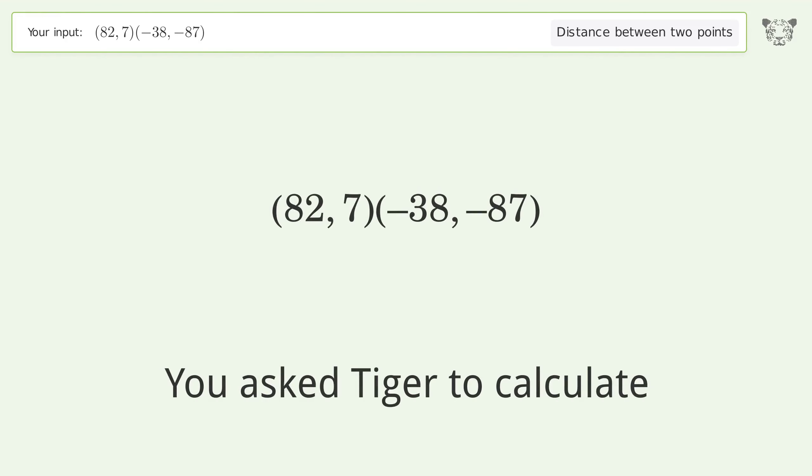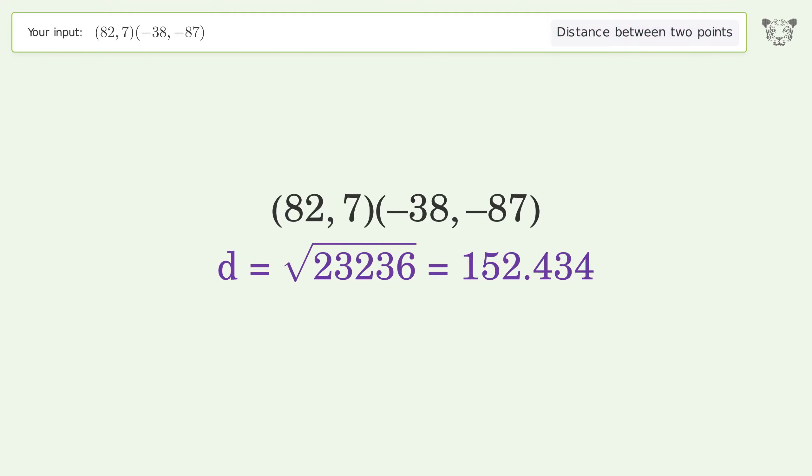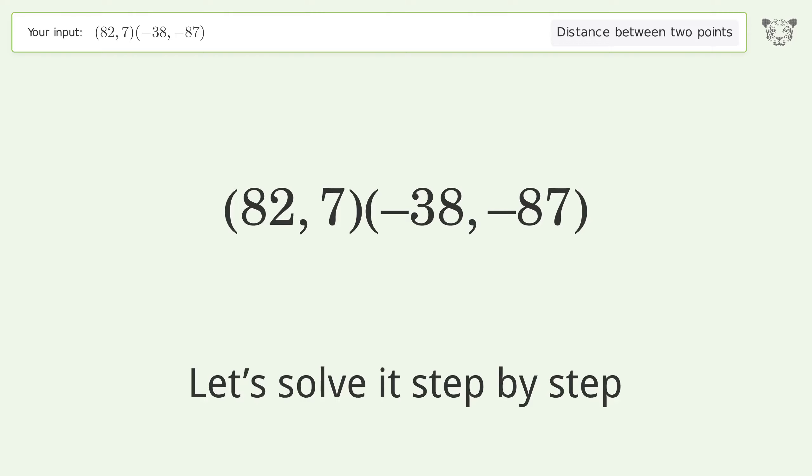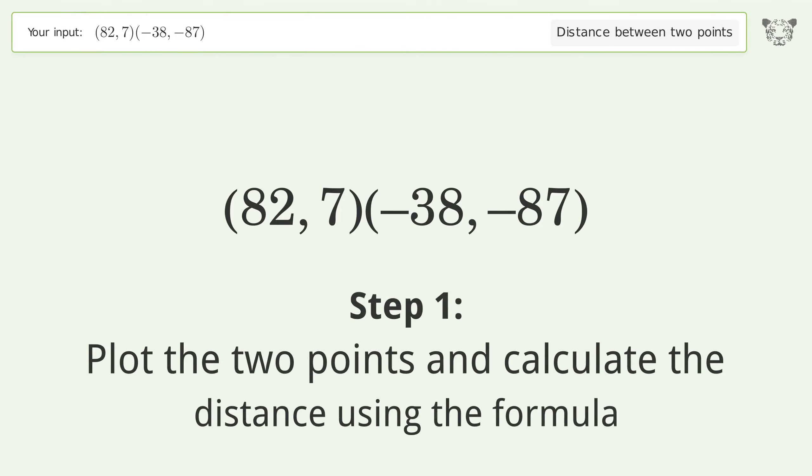You asked Tiger to calculate the distance between two points. The distance between the two points is the square root of 23,236 or 152.434. Let's solve it step by step. Plot the two points and calculate the distance using the formula.